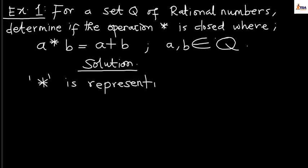We're starting like this so we understand the full concept — our asterisk is just explaining a basic additional operation. We are asked: is this operation closed under set Q? All we need to do is take any two rational numbers. Let's say A equals 3 and B equals 5, and both 3 and 5 are elements of set Q as rational numbers.